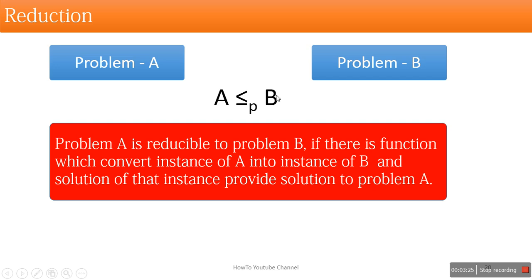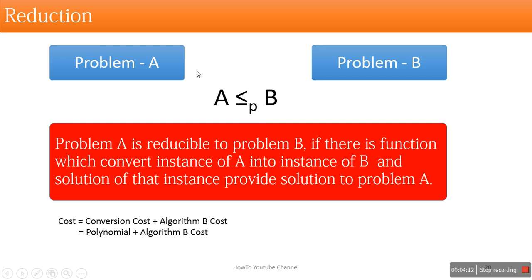This situation is similar to using a function in a programming language. When we use a function in our code, we don't know how that function works internally — we only care about what input it requires and what output it produces. So if a problem is reducible to another problem, it means the algorithm for that other problem can be used to solve the first problem. For that, we need a function that converts input into the required format in polynomial time.